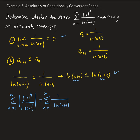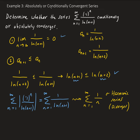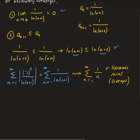This series kind of resembles 1 over n. And 1 over n — we know this is the harmonic series, which diverges. The harmonic series 1 over n is just a P-series with P equals 1, and so this is diverging. We're going to apply the direct comparison test.